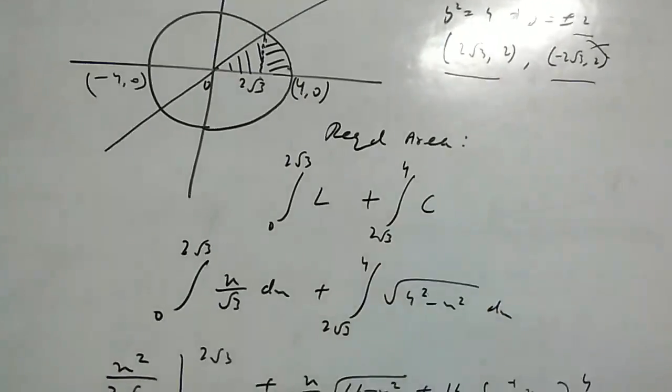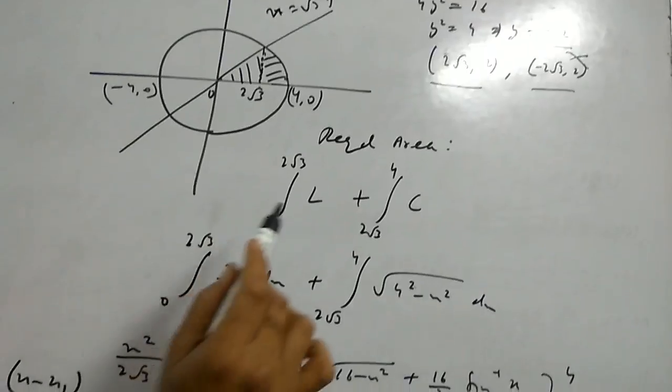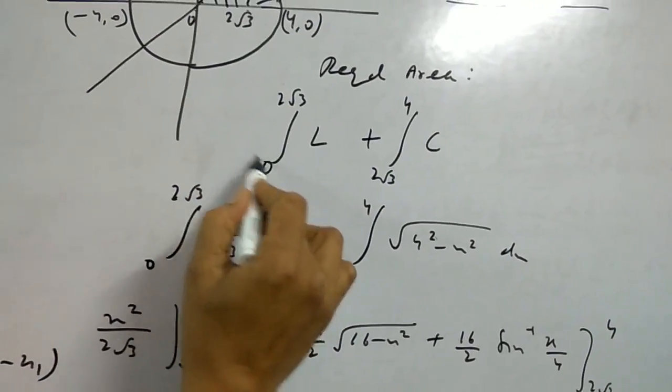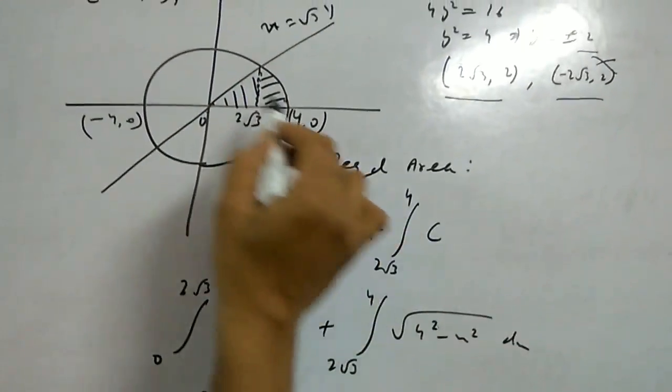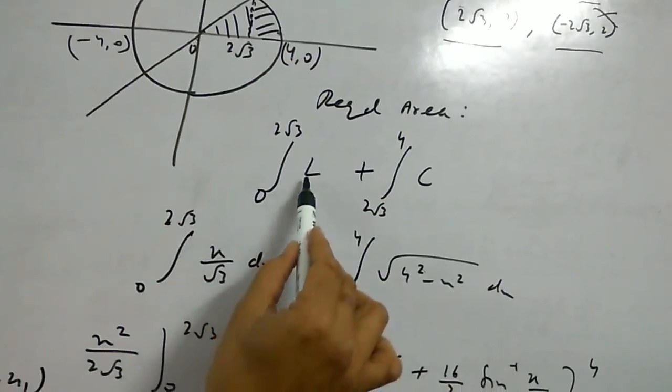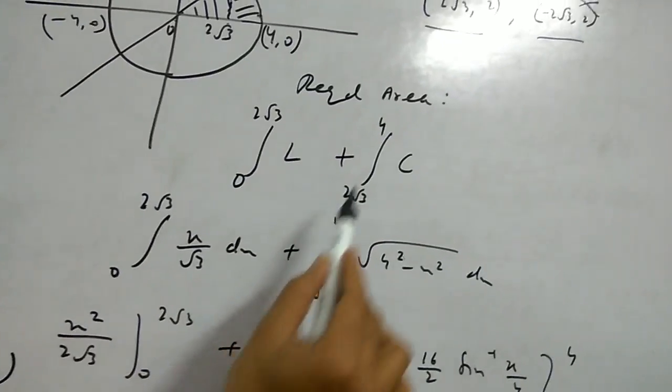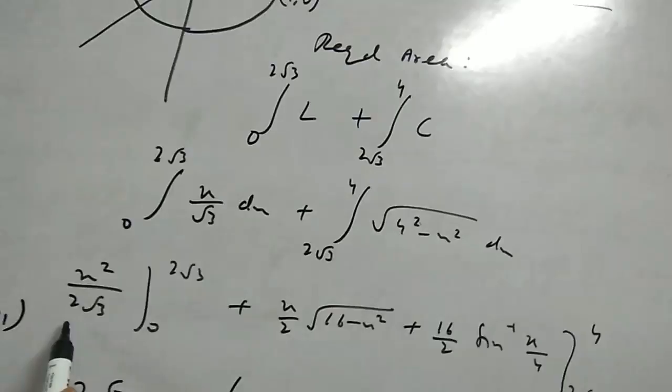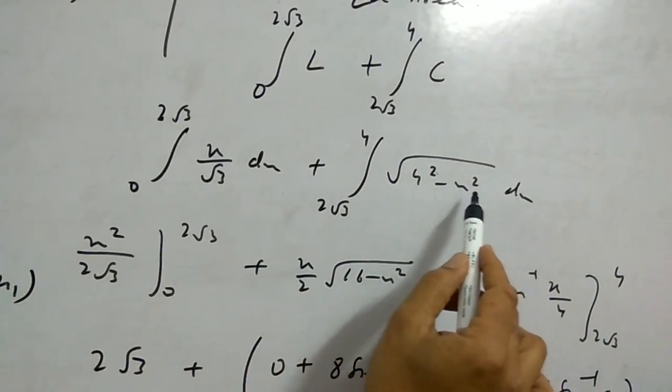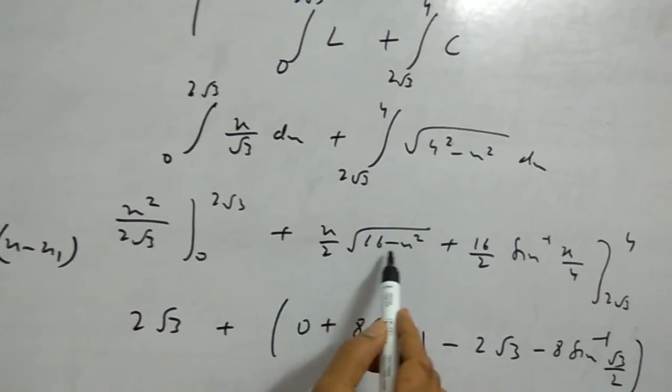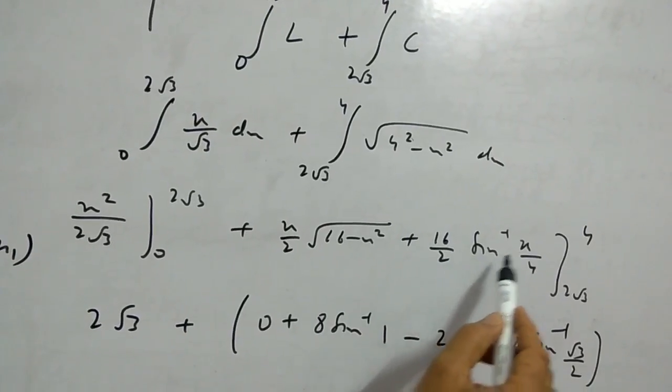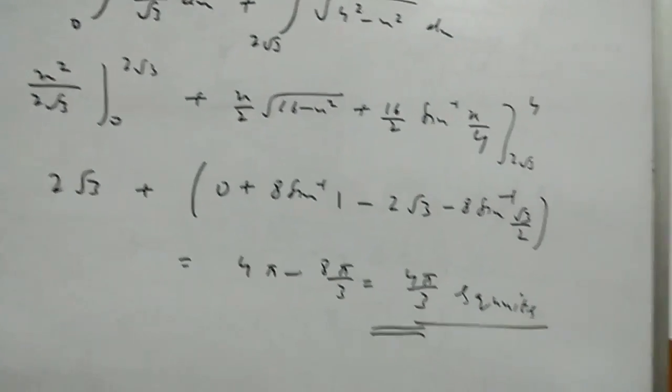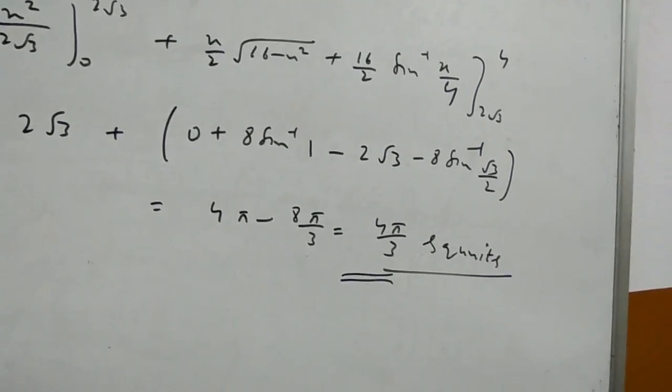Required area: integrate from 0 to 2 root 3 for the line, plus 2 root 3 to 4 for the circle. Circle equation gives y equals root of 16 minus x square. Use the formula: x by 2 root of a square minus x square plus a square by 2 sin inverse x upon a. Put limits and the answer is 4π by 3 square units.